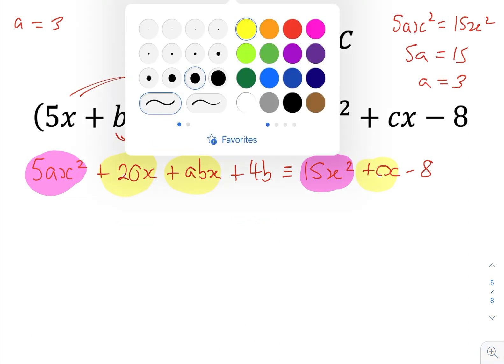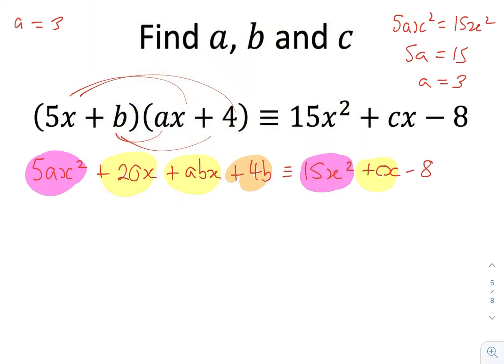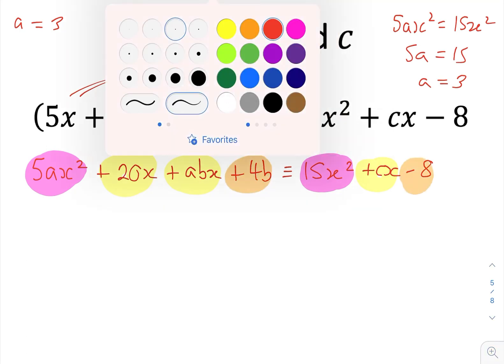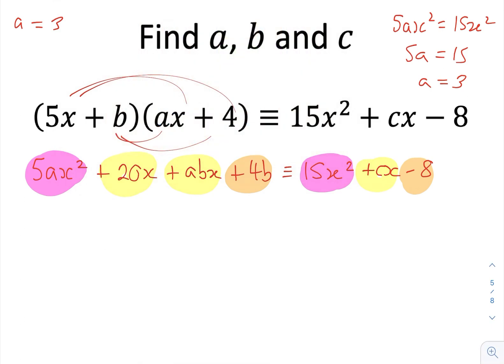So I'm going to have to equate the other part to get this next bit. So I'll equate these two, which will get me the value of b. So we can say that 4b is equal to negative 8. So if 4b equals negative 8, then b has got to be negative 2.